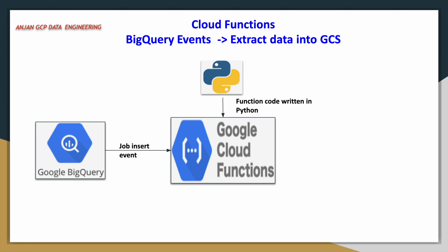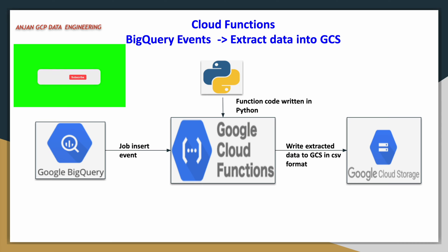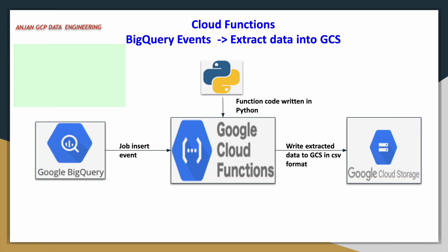We will write the cloud function in Python. It will basically extract the data from the table and write the data into a Google Cloud Storage bucket in CSV format. This is the use case. In our previous video, we saw the reverse: extracting data from Google Cloud Storage and writing it into BigQuery.